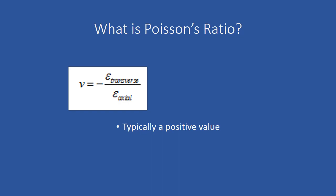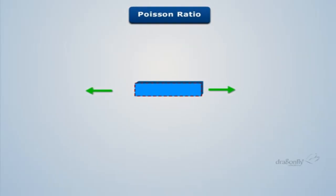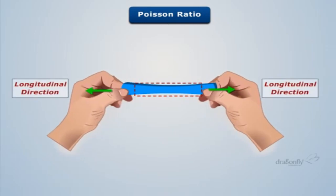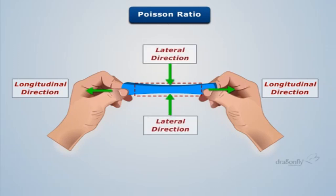For most materials this is a positive value. Here we are looking at the behavior of a typical material when stretched and expanded in the longitudinal direction. The material is compressed in the lateral direction. This results in a positive value of Poisson's ratio.